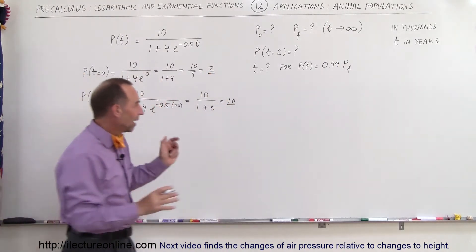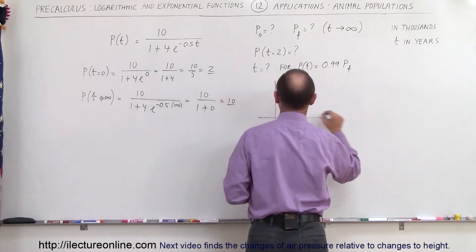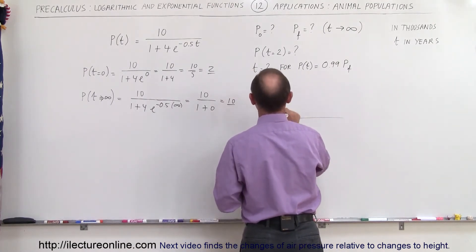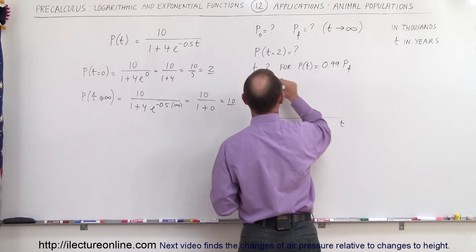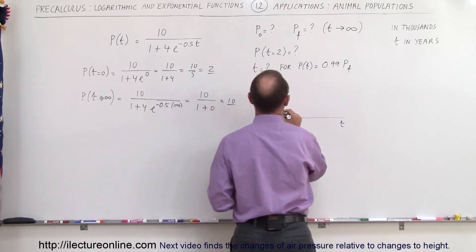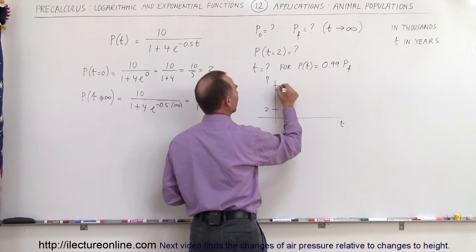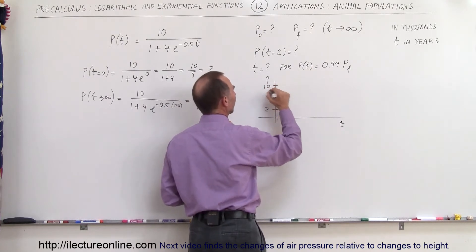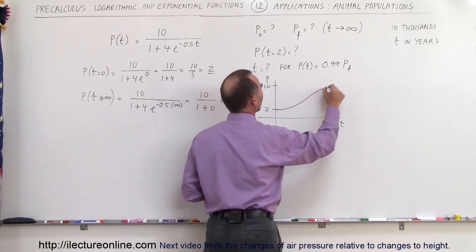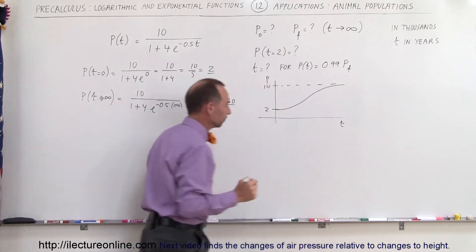If we were to graph this function, the horizontal axis is time and the vertical axis is population. At time equals zero we start at 2,000, and we end up finally at 10,000. The curve looks like a growth function, rising from 2,000 toward the limit of 10,000.